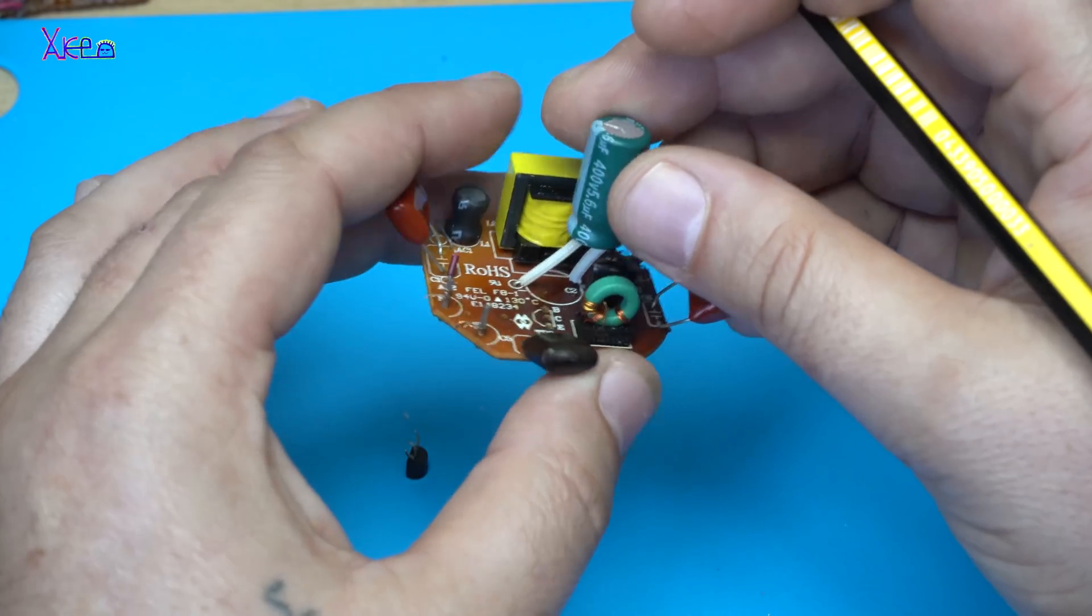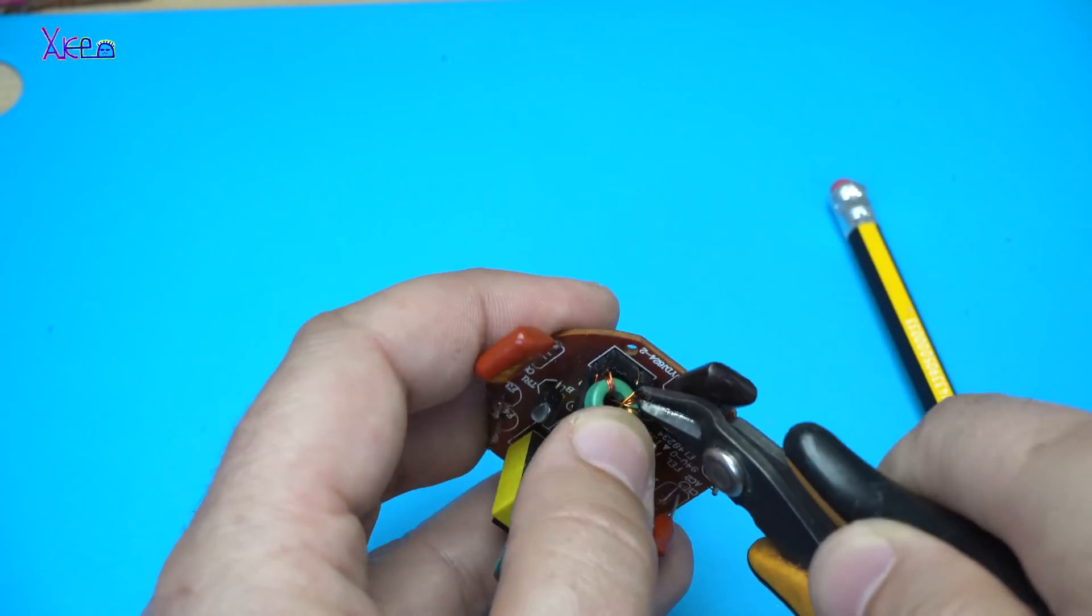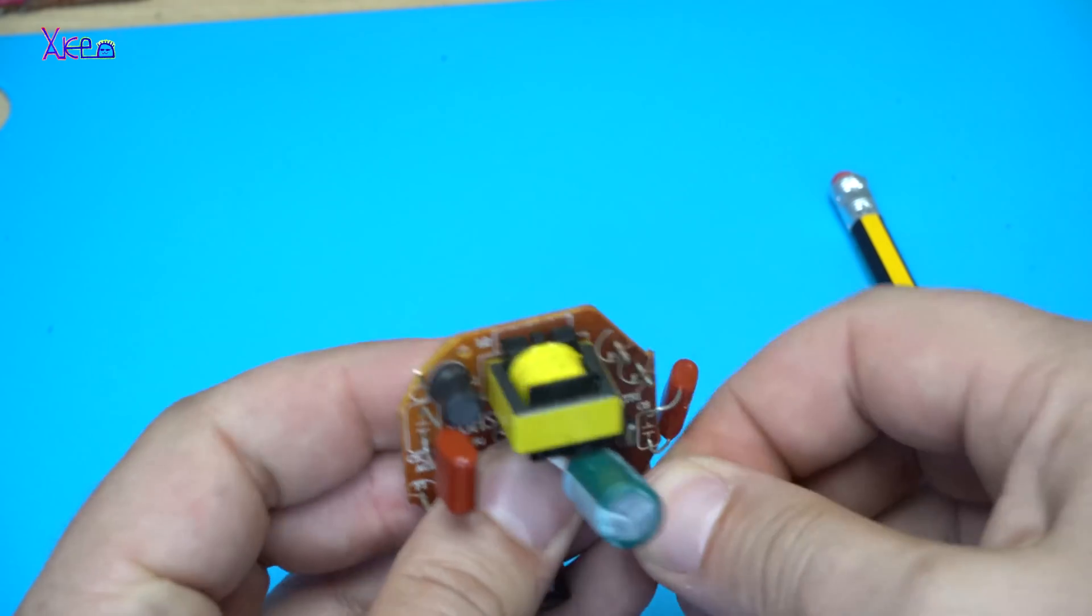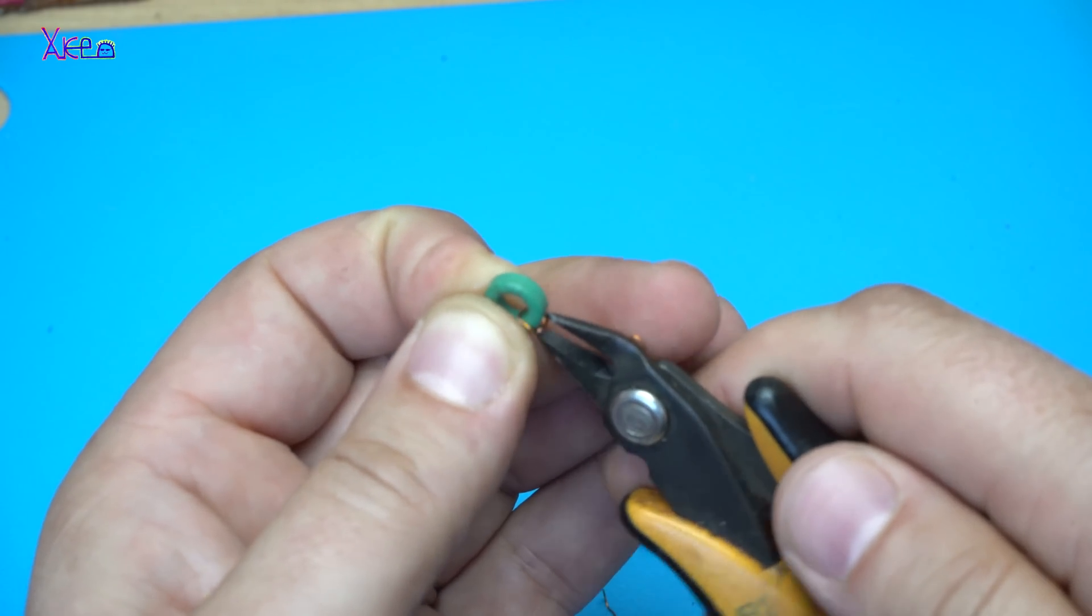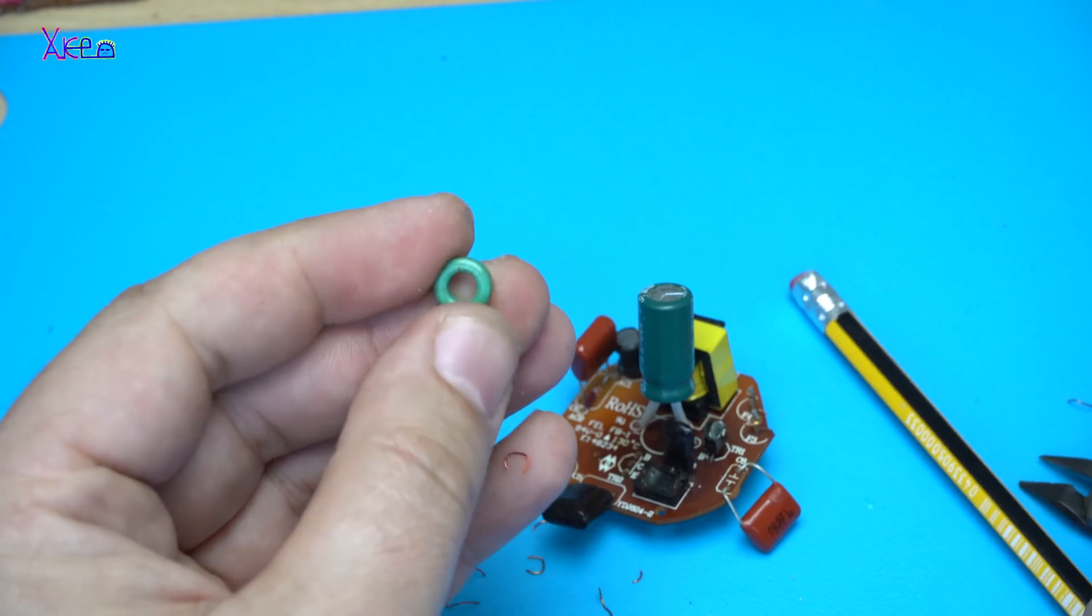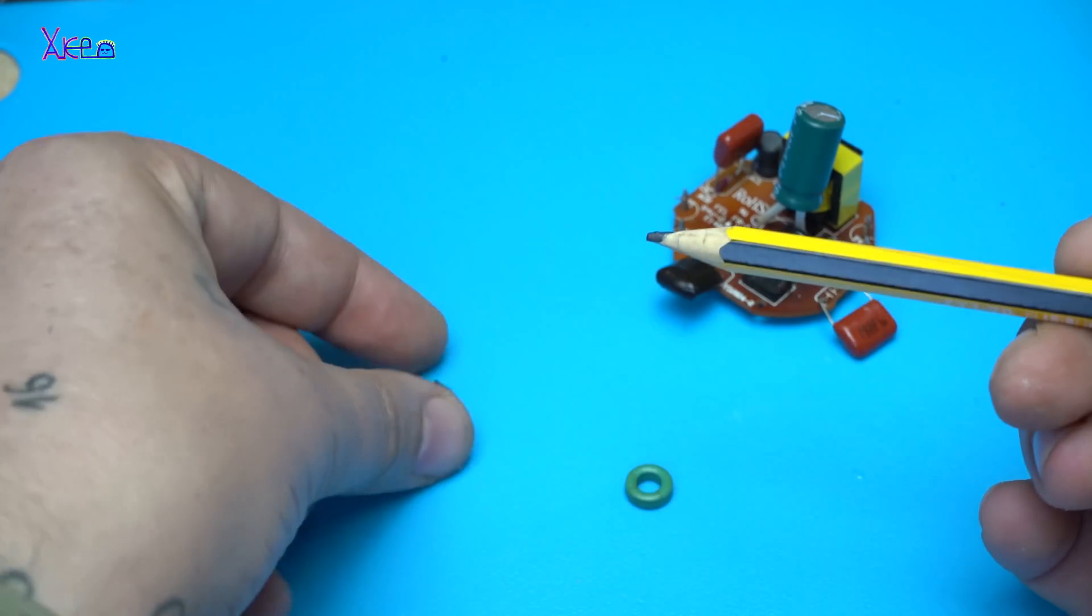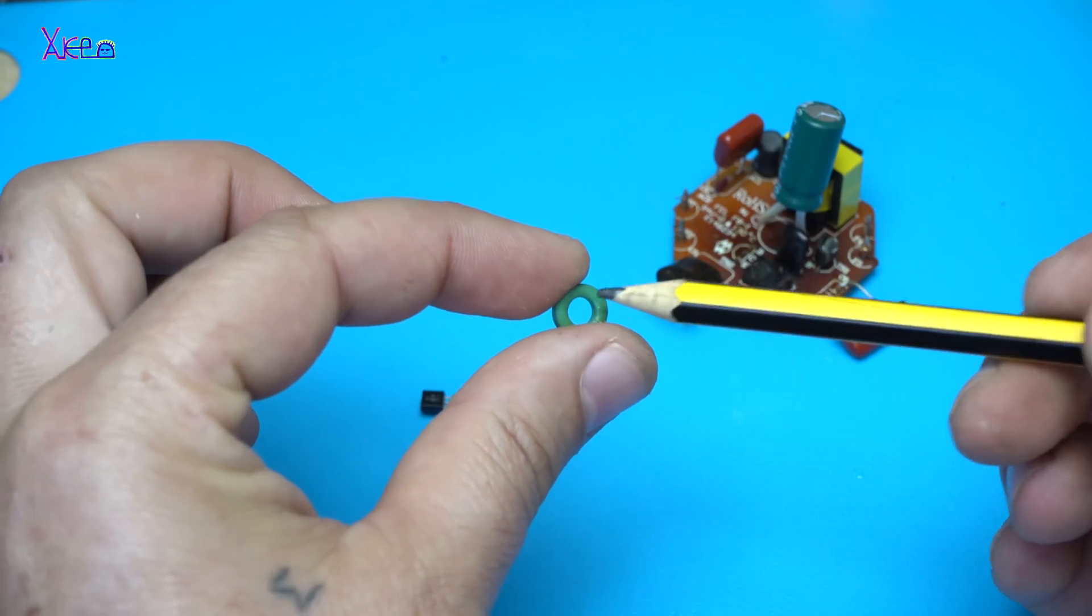Next to pull out is the ferrite core. So far, I desoldered the NPN transistor and the ferrite core. That is very important.